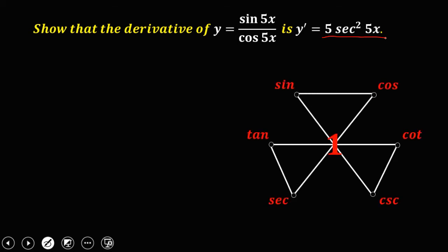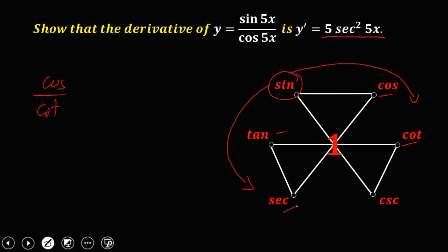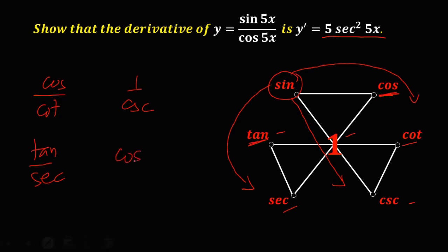Using this figure to find the different fundamental identities: sine is equal to cosine over cotangent, sine is equal to tangent over secant, and sine is equal to 1 over cosecant. Also, the product of two functions — cosine times tangent — gives the middle function, which is sine. These are the different identities of sine and this is how to use this figure in finding the fundamental identities.